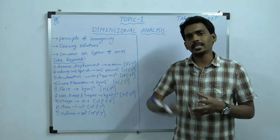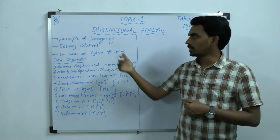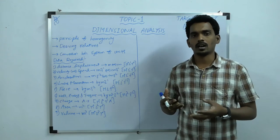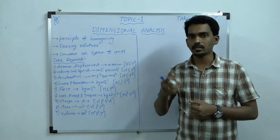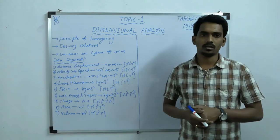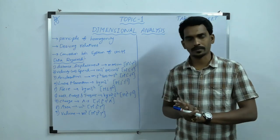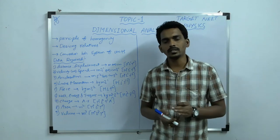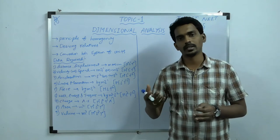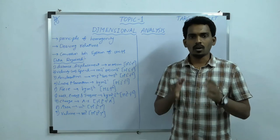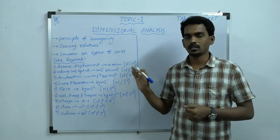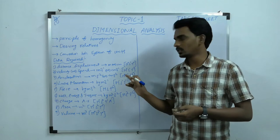To solve any such kind of question based on any of these topics, we need the dimensional formula for a few quantities. I have listed out nine different quantities. The very first one is distance, displacement, radius, perimeter, length, height, breadth, thickness — all those quantities we measure in terms of meter or centimeter. The dimension will become L power 1.